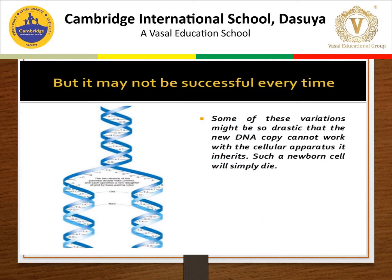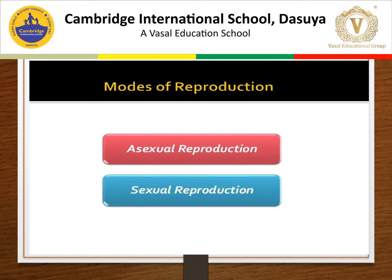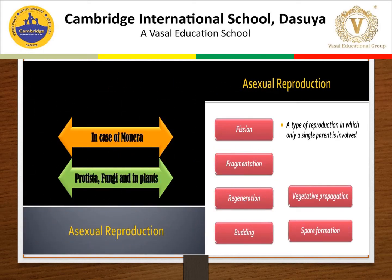Some variations are not good. It might be so drastic that the new DNA copy cannot work with the cellular apparatus — a cell inheriting such DNA will simply die. There are two modes of reproduction: asexual reproduction and sexual reproduction.